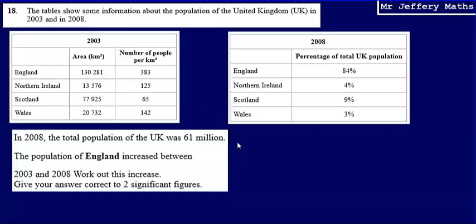What I'm going to need to do is use these tables to work out what was the actual population of England in 2008, and then once I have that answer I can take away the population for England in 2003, and that's going to give me my answer.